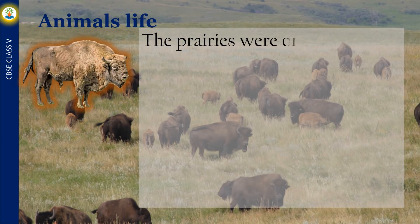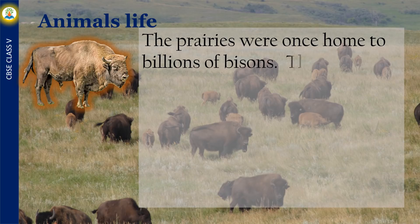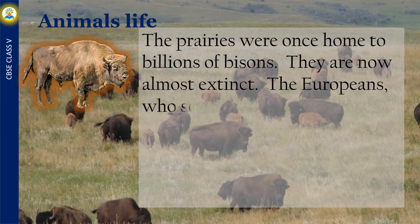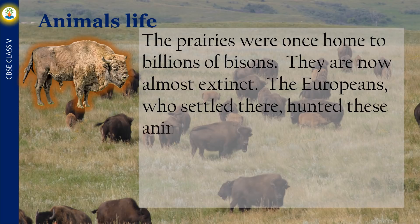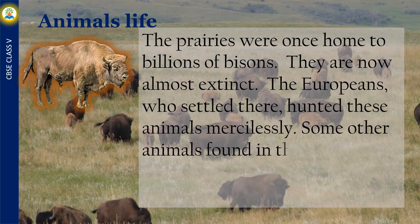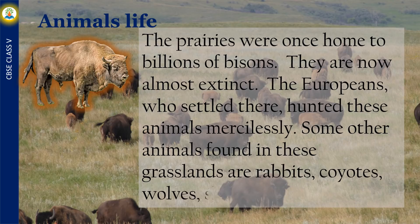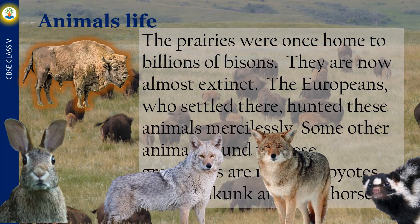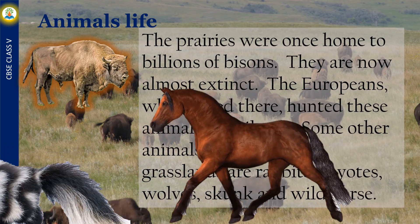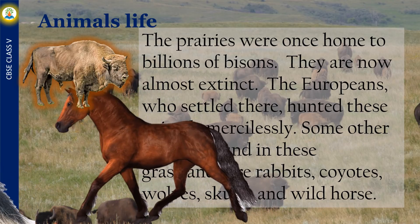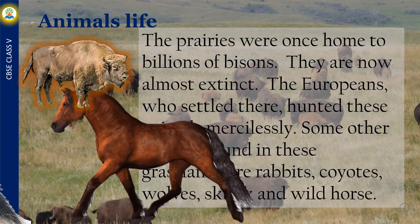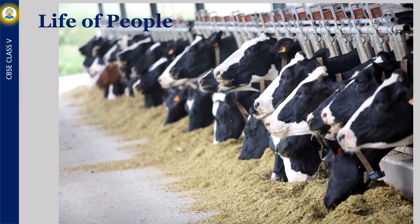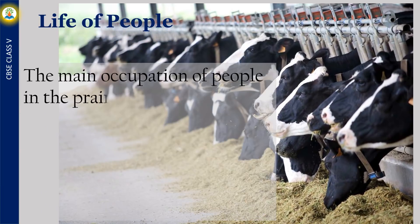The prairies were once home to billions of bisons, but they are now almost extinct. The Europeans who settled there hunted these animals mercilessly. Some other animals found in these grasslands are rabbits, coyotes, wolves, skunk, and wild horses.